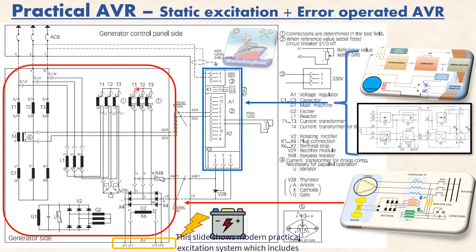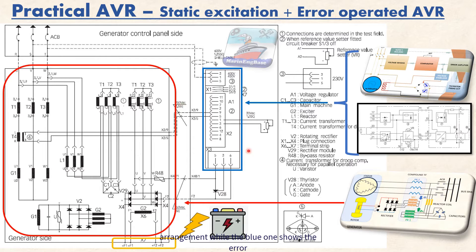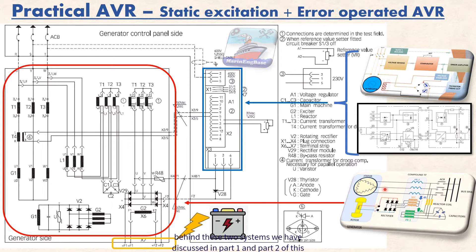This slide shows a modern practical excitation system, which includes both excitation systems. The red color shows the compound excitation system — the compound transformer arrangement — while the blue one shows the AR operator AVR. Most of these have been discussed; the fundamental operation behind these two systems was covered in part one and part two of this AVR discussion.